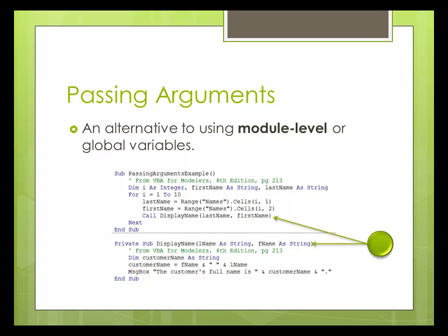You can see in this example where I have a subroutine which will call a subroutine called displayName, which I've made private. So if I try to run any of these macros, I'll only see the subroutine called passingArgumentExample, and it will call the displayName subroutine and passes in two arguments — the last name and the first name — every time the subroutine goes through the loop. It simply sends the arguments to the subroutine, and the subroutine has to declare in its heading that it's going to accept those two arguments.